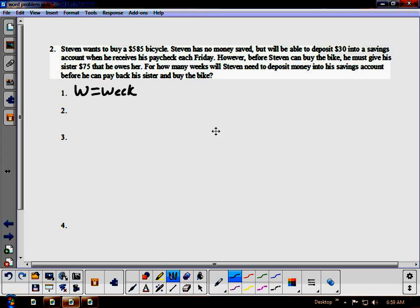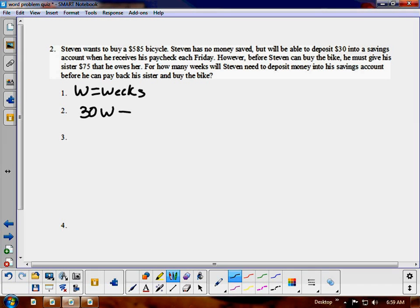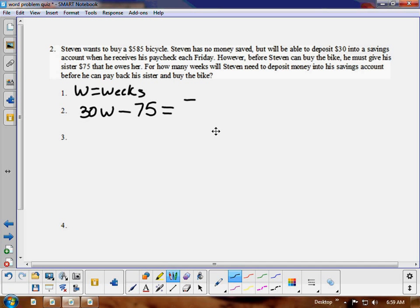So we're going to use W as weeks. And we're going to set up. Now we know that he's going to do $30 a week. However he needs to pay back his sister first, the $75. Then this has to add up to $585, what's left over, what's minus $75. So we have our defined variables, we set up. Now we need to solve.